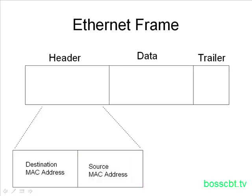Every frame has these fields. So when the frame hits a switch or any device, that device can look at it and say, where is this supposed to go, and where did it come from? This is basic information in every Ethernet frame, and it's going to be very valuable to the switch in how it learns MAC addresses.